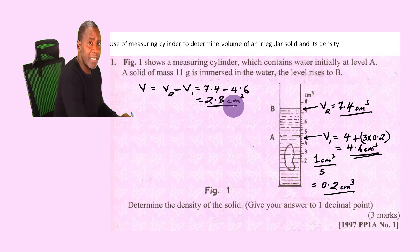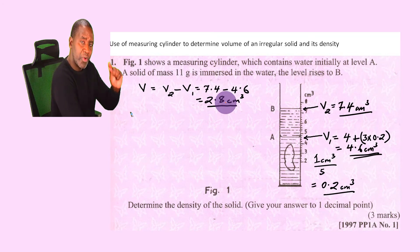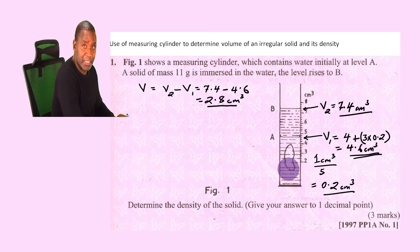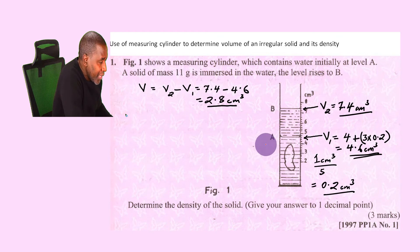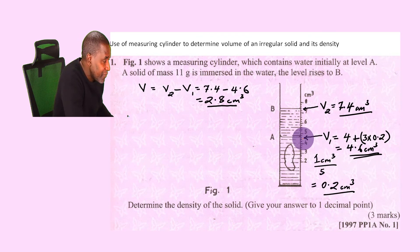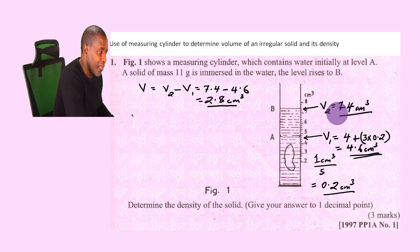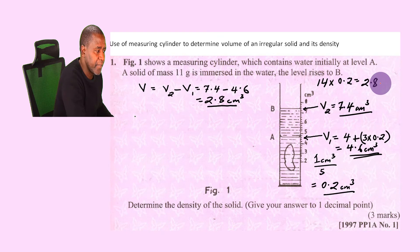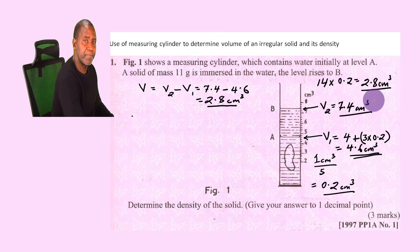A third method: count the number of small divisions between the two water level marks. Starting from level A to level B, count 1, 2, 3... up to 14 divisions. Since each division is 0.2 cm³, multiply 14 by 0.2 to get 2.8 cm³ — the same answer. You can use any of these three methods.